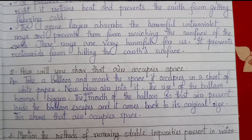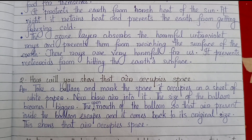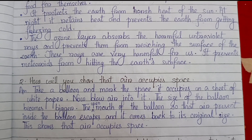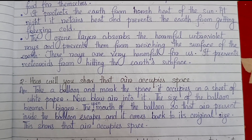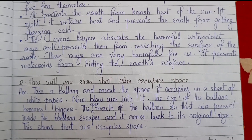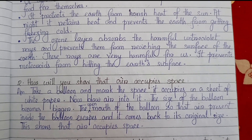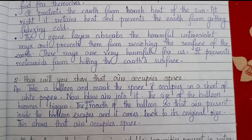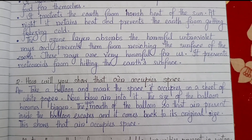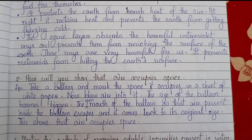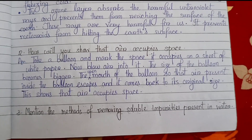Number 2: how will you show that air occupies space? Take a balloon and mark the space it occupies on a sheet of white paper. Now blow air into it — the size of the balloon becomes bigger. Open the mouth of the balloon so that air present inside escapes and it comes back to its original size. This shows that air occupies space.